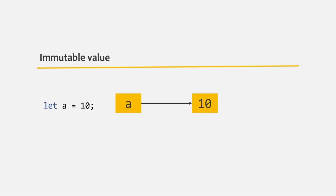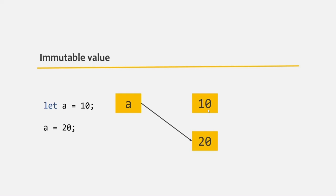Let's say we are creating a variable 'a' and assigning a numeric value 10. An identifier called 'a' will be created and somewhere in memory this value 10 will be stored, and that identifier will point to that value 10. But later in the program, when we change the value of 'a' to 20, this value 10 will not change to 20. Instead, somewhere in memory a new value 20 will be created and the variable 'a' will point to that. The previous value is still there, but since it is not mutable, it cannot be changed, so a new value gets created and the identifier points to that new value.